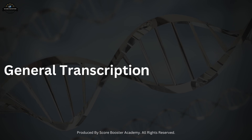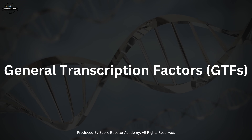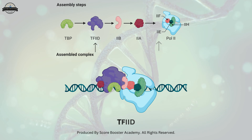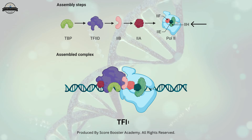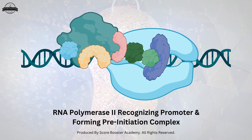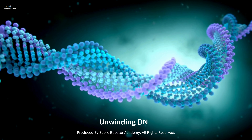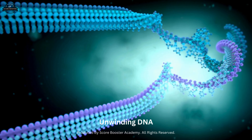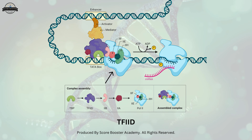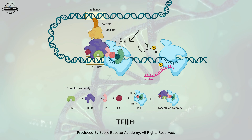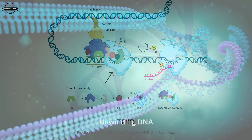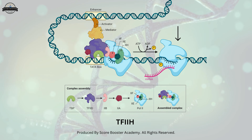General transcription factors are essential for the transcription of all protein-coding genes in eukaryotes. They include TF2A, TF2B, TF2D, TF2E, TF2F, and TF2H. These factors assist RNA polymerase 2 in recognizing the promoter, forming the pre-initiation complex, and unwinding the DNA. TF2D, which includes the TBP subunit, binds to the TATA box and recruits other general transcription factors and RNA polymerase 2 to the promoter. TF2H possesses helicase activity that unwinds the DNA and kinase activity that phosphorylates the C-terminal domain of RNA polymerase 2, initiating transcription.